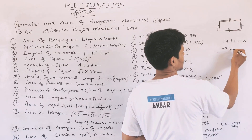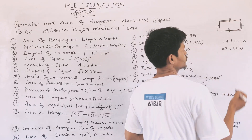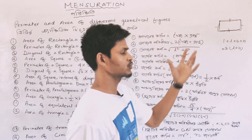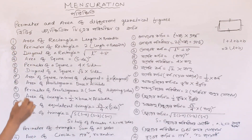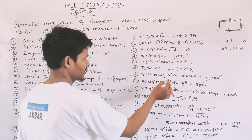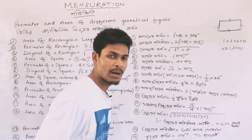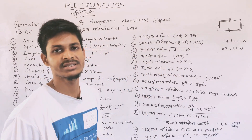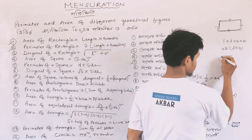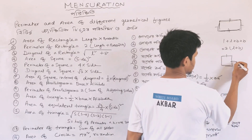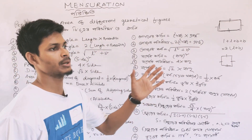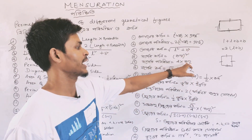The formula gives 2 times length plus breadth. For a square, the perimeter is 4 into side, because all 4 sides of a square are equal. That means the perimeter equals 4 into side.